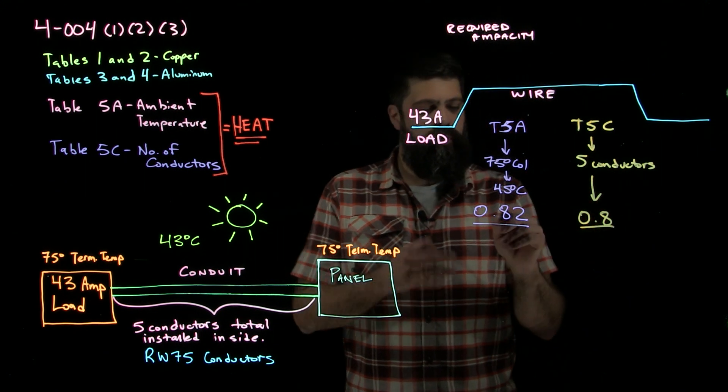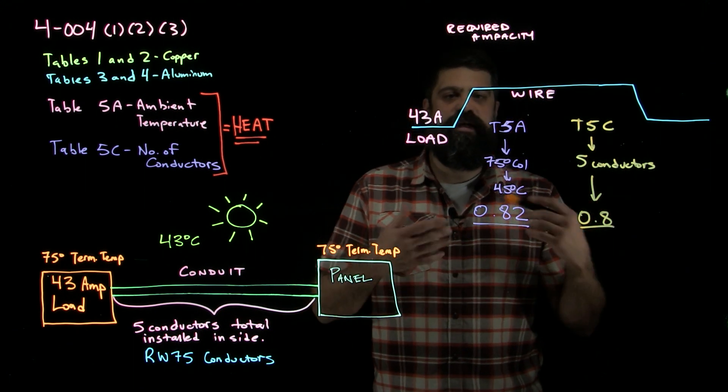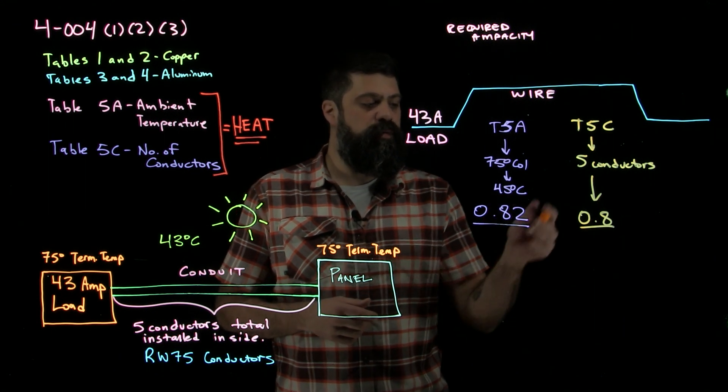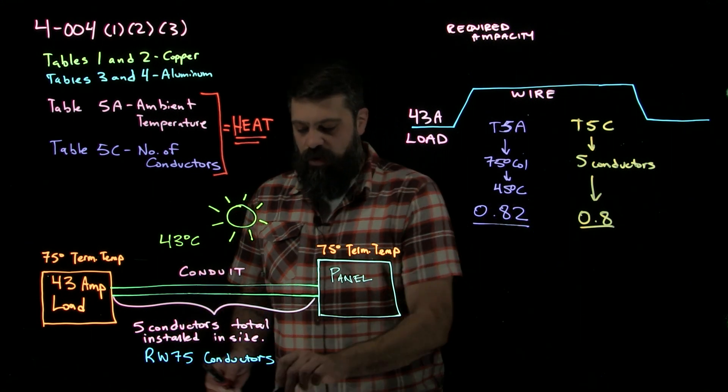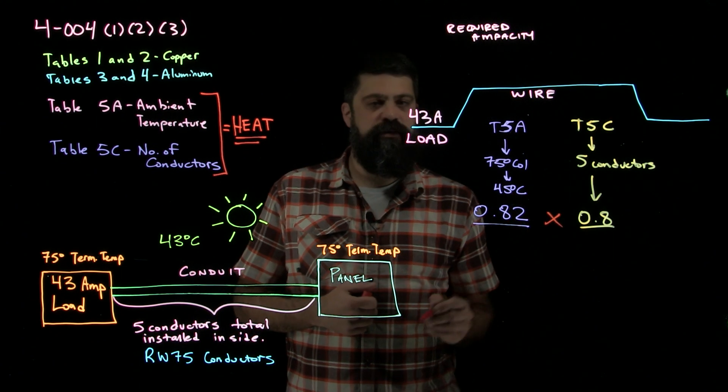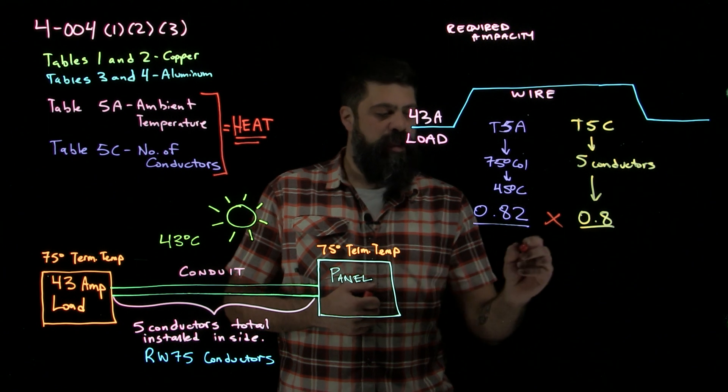So what do these numbers mean? 0.82, 0.8, that's telling me what percentage of current they can handle based on the heat that's in there. So 82% and 80%. In order to figure out an overall derating factor for this entire system, I multiply these two numbers together to get an overall number.